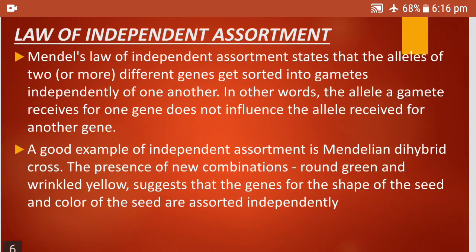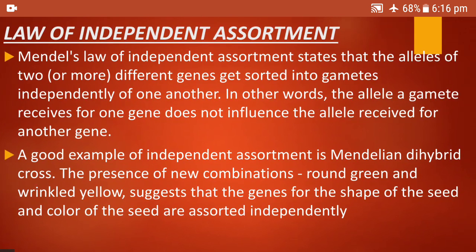From this experiment, Mendel concluded the law of independent assortment. Mendel's law of independent assortment states that the alleles of two or more different genes get sorted into gametes independently of one another. In other words, the allele a gamete receives for one gene does not influence the allele received for another gene. If it is round, it need not be yellow only — it can be round and green also. If it is wrinkled, it need not always be wrinkled with green — it can be wrinkled with yellow also. So the genes are independently assorted and separated, and the cross takes place.